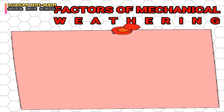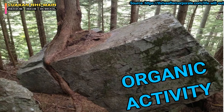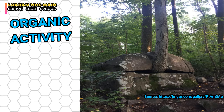The next factor is organic activity. It happens when plants break up rocks with their growing roots, or when plant acids help dissolve rock. For example, when plants grow on rocks, their roots tend to go into the cracks of the rock, and these roots can break the rock apart.